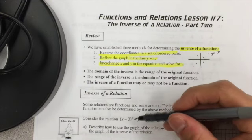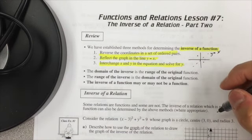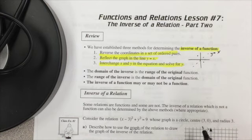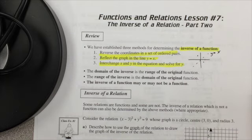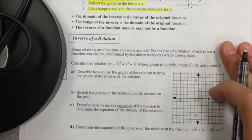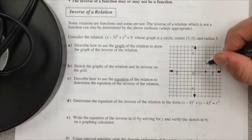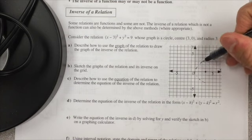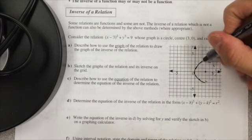Consider this graph: x minus 3 squared plus y squared is equal to 9, whose graph is a circle. The center of this circle is at (3, 0) and the radius is 3. So if I'm at 3 and 0 and my radius is 3, and I draw my circle, it's going to look something like this — and that's what my graph is going to look like.